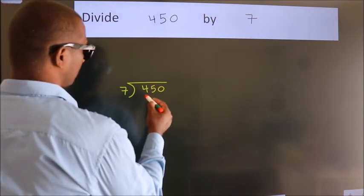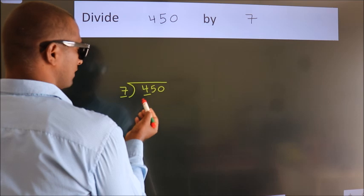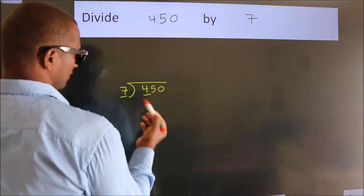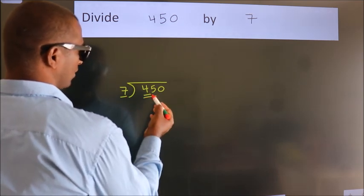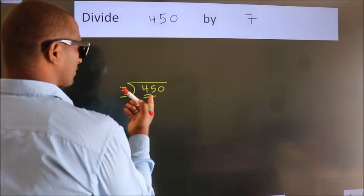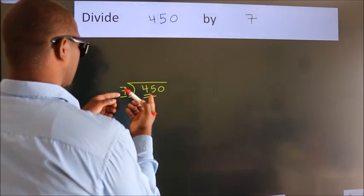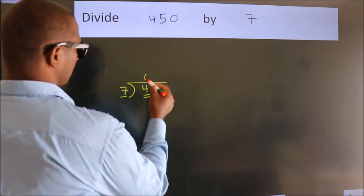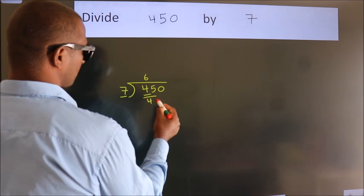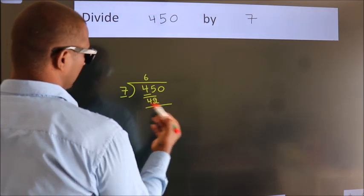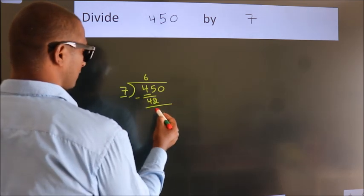Here we have 4. Here 7. 4 is smaller than 7, so we should take two numbers: 45. A number close to 45 in the 7 table is 7×6=42. Now we subtract. We get 3.